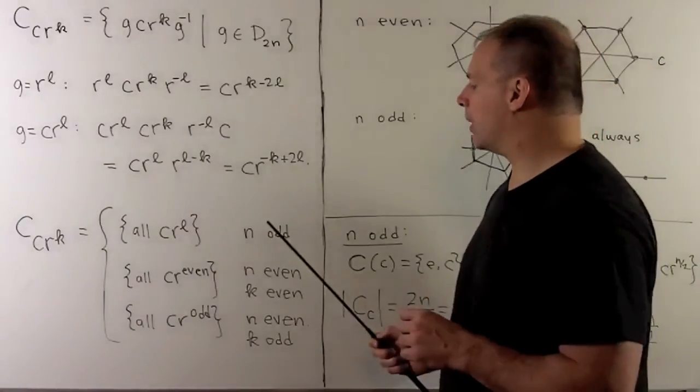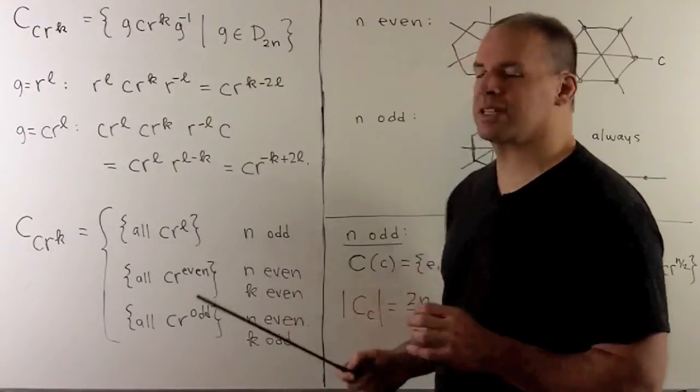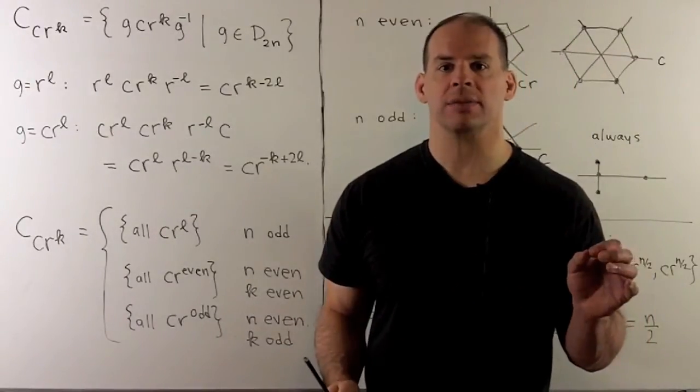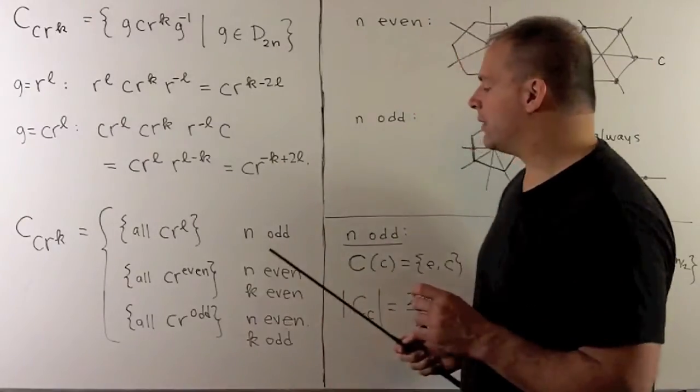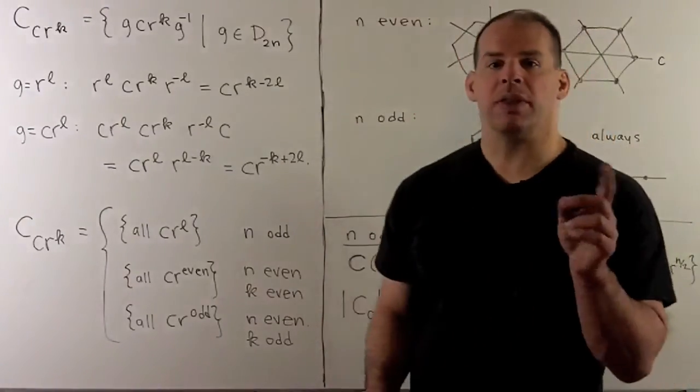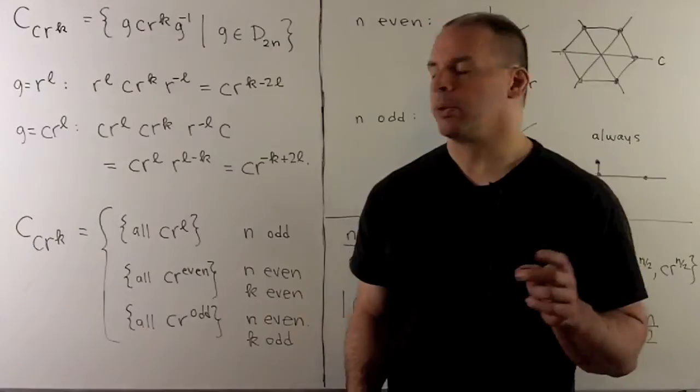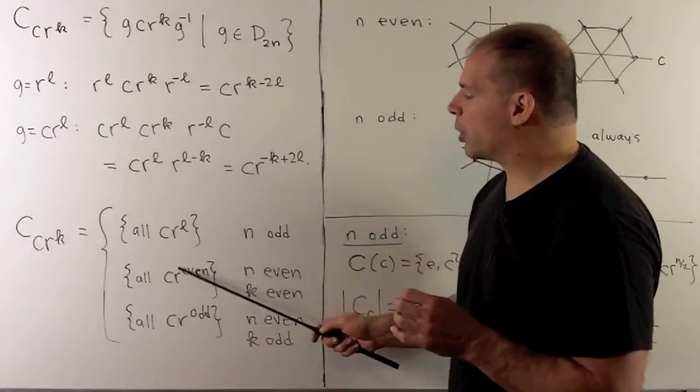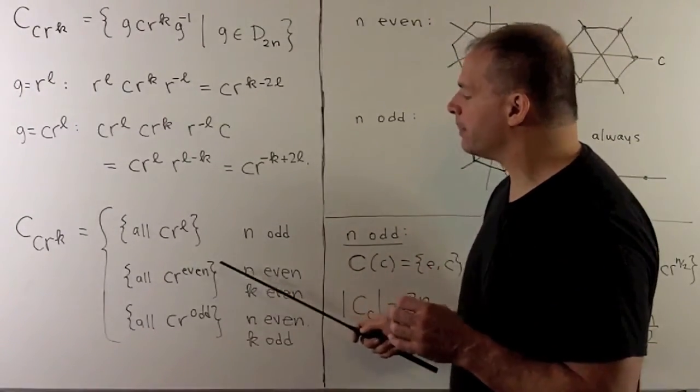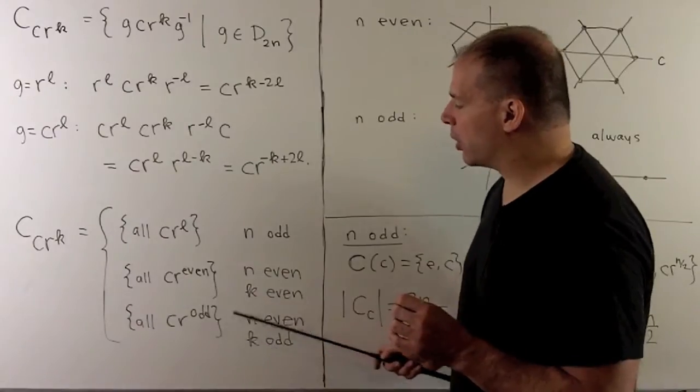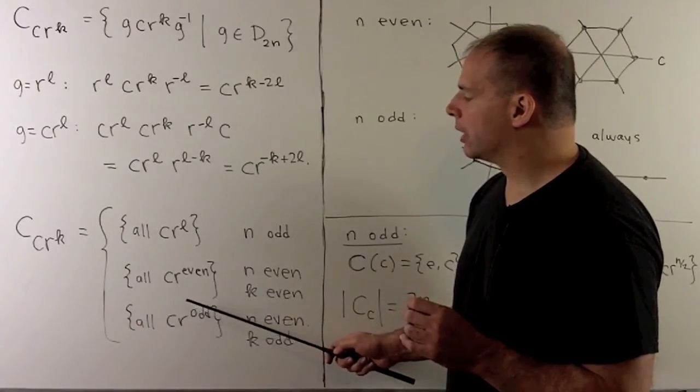Again, we're going to have two cases. First, when n is odd, we're going to have all reflections falling into one class. If n is even, the reflections split into two classes. One, where the exponent on the rotation part is even. The other, where the exponent is odd.